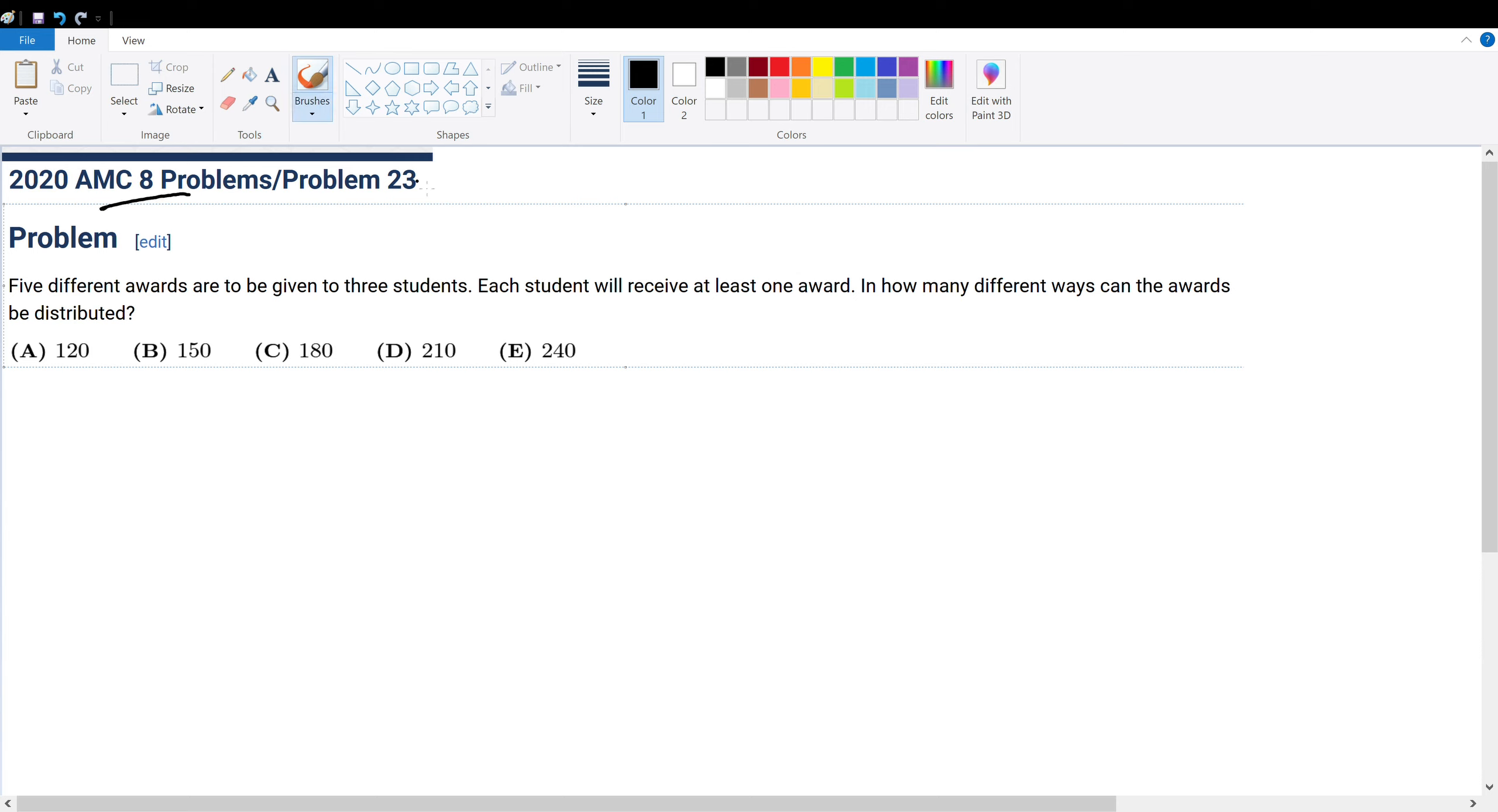Good day, mates. Today we're solving AMC 8, problem number 23. There are five prizes to give out, and there are three students. So how many ways are there to give out prizes to these students?